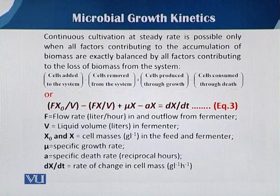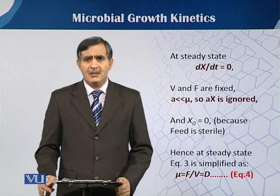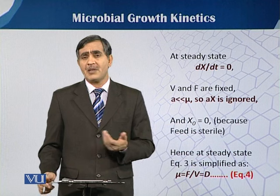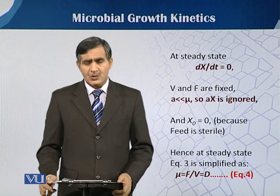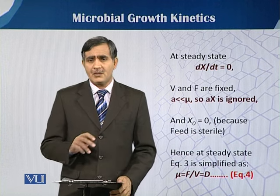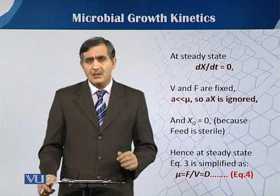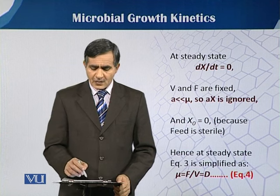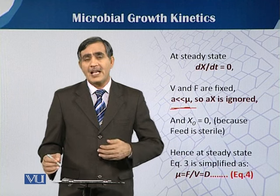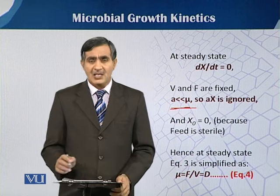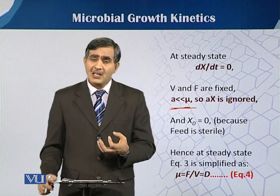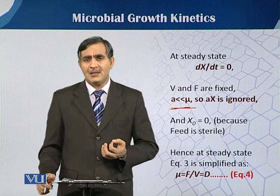When we say that dx/dt is equal to 0, we refer to the steady state, as discussed in the previous module. According to this, if we assume that the death rate A is very small compared to the growth rate μ, then A·x — the total number of cell deaths — is very small and can be ignored.